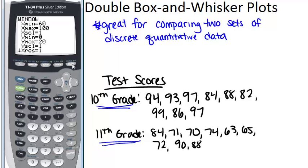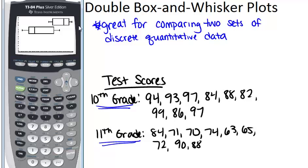Now we are done. We can push graph and there we have it, our two box and whisker plots on the same graph. The top one is for 10th grade and the bottom one is for 11th grade.